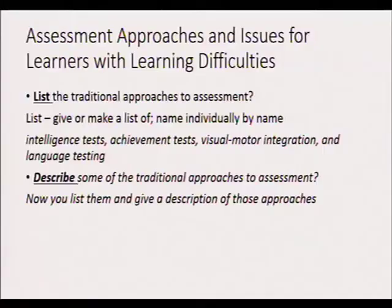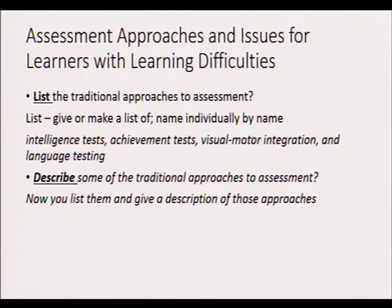Another section where you are having difficulties is assessment approaches and issues with learning difficulties. There are different approaches. A question might say: list the traditional approaches to assessment. When you list something, you give each item individually by name — just say: intelligence test, achievement test, visual-motor integration, language testing. Those are the ways you list the types of traditional approaches. If somebody says describe some of the traditional approaches to assessment, you need to list them and give a description of those approaches.